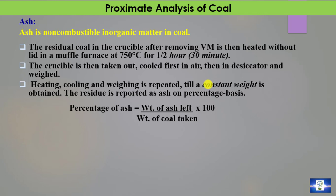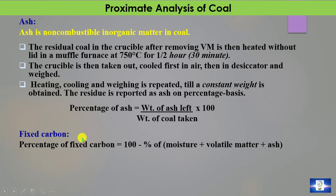Unlike previous cases where loss in weight was reported, here the residue is reported as ash. So, percentage of ash equals weight of ash left divided by weight of coal taken, multiplied by 100. Fixed carbon is then calculated as 100 minus the sum of percentage moisture, volatile matter, and ash.